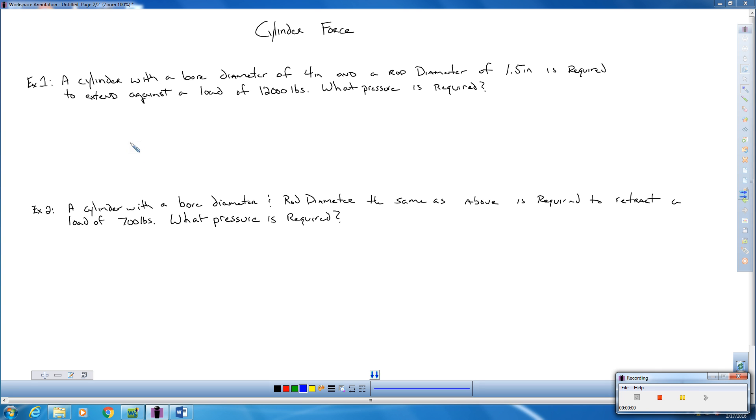So if we take a look at the first problem, we have a cylinder with a bore diameter of 4 inches and a rod diameter of 1.5 inches is required to extend against a load of 12,000 pounds. What is the pressure required?